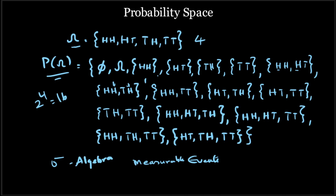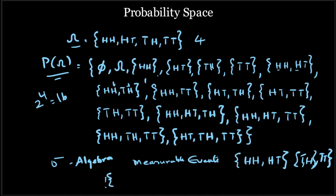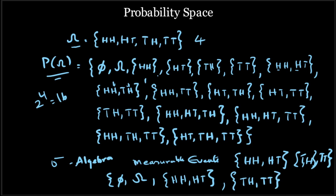For example, if you are looking for information corresponding to the outcome of the first coin toss, you can define a sigma algebra as: the null set phi, omega itself, the event {HH, HT} where the outcome of the first coin toss is a head, and the event {TH, TT} where the outcome of the first coin toss is a tail. This sigma algebra gives the information regarding the outcome of the first coin toss.